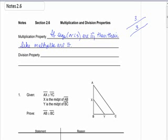And it works the same way if I cut things in half, if I divide. I could say if segments or angles start off as congruent or are congruent, then their like divisions are congruent.